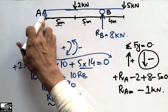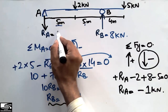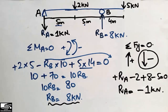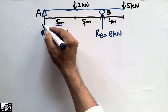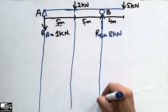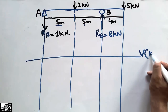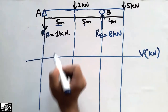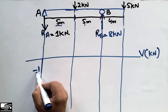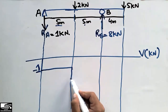Now that we have the support reactions, we can draw the shear force and bending moment diagrams. First we draw the reference lines. RA is 1 kN acting downward, so we start at −1 kN. There is no force until the next load, so it moves straight. Then the 2 kN force also acts downward, bringing the shear force to −3 kN.